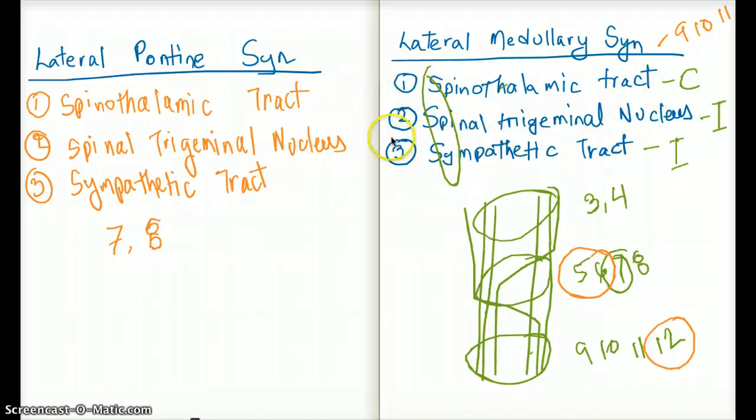Additionally, the sides—see how the spinothalamic was contralateral, the effect was contralateral—these are not going to change for lateral medullary syndrome or lateral pontine syndrome. This is going to remain the same. Spinothalamic has a contralateral effect. Spinal trigeminal nucleus has an ipsilateral effect. And sympathetic tract is also going to have an ipsilateral effect.